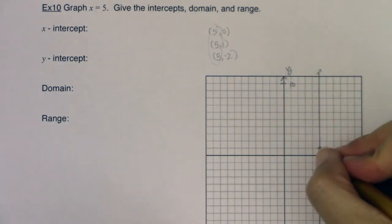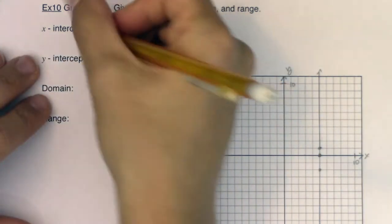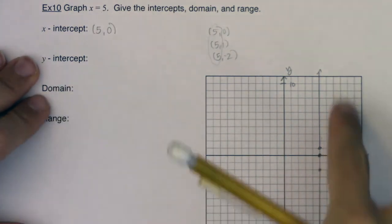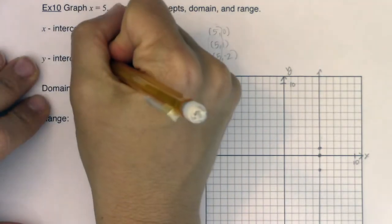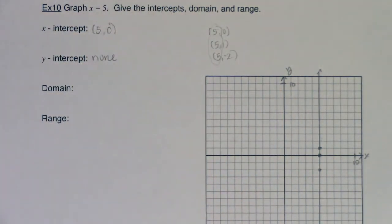Alright, so the x-intercept, you can see it right here, it crosses our x-axis at the ordered pair 5, 0. Where does this line x equaling 5 cross the y-axis? Well, you can see it doesn't. I have no y-intercept. Okay, that's fine. There are graphs out there that don't have y-intercepts. This is an example of one.